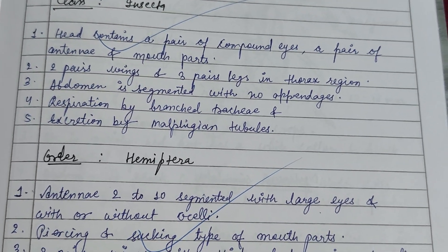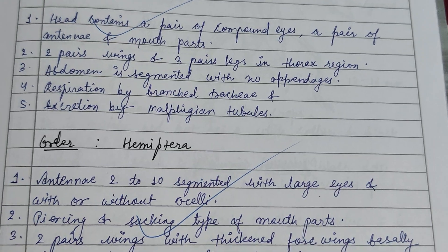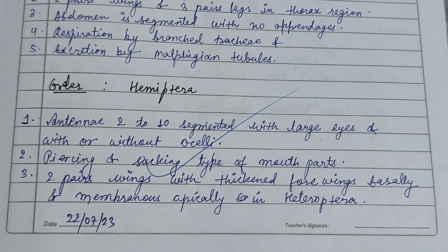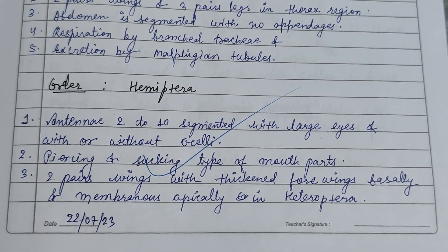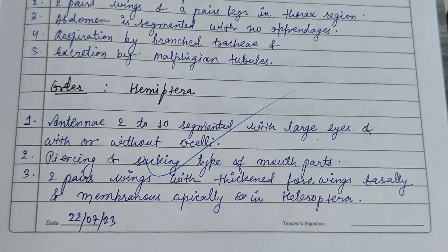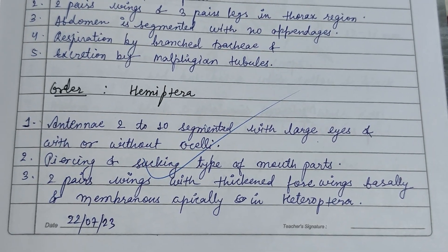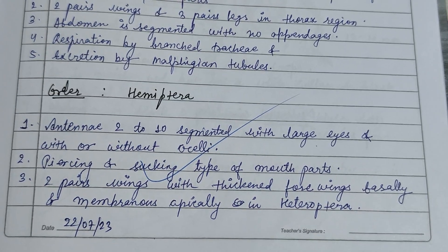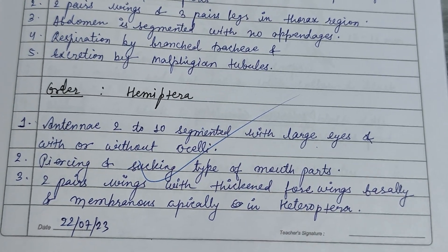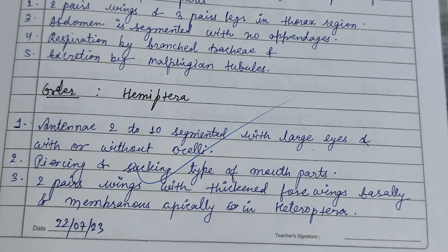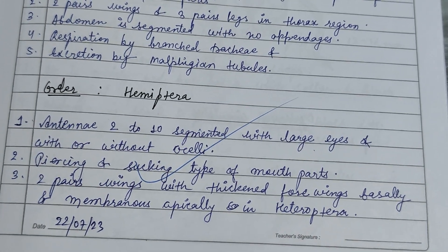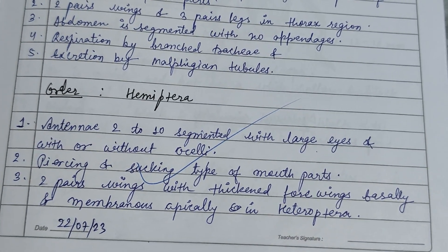The order Hemiptera — as the name suggests, 'hemi' means half — have half wings which may or may not be segmented, divided into two parts. The antennae have two to ten segments, with large compound eyes, with or without ocelli.